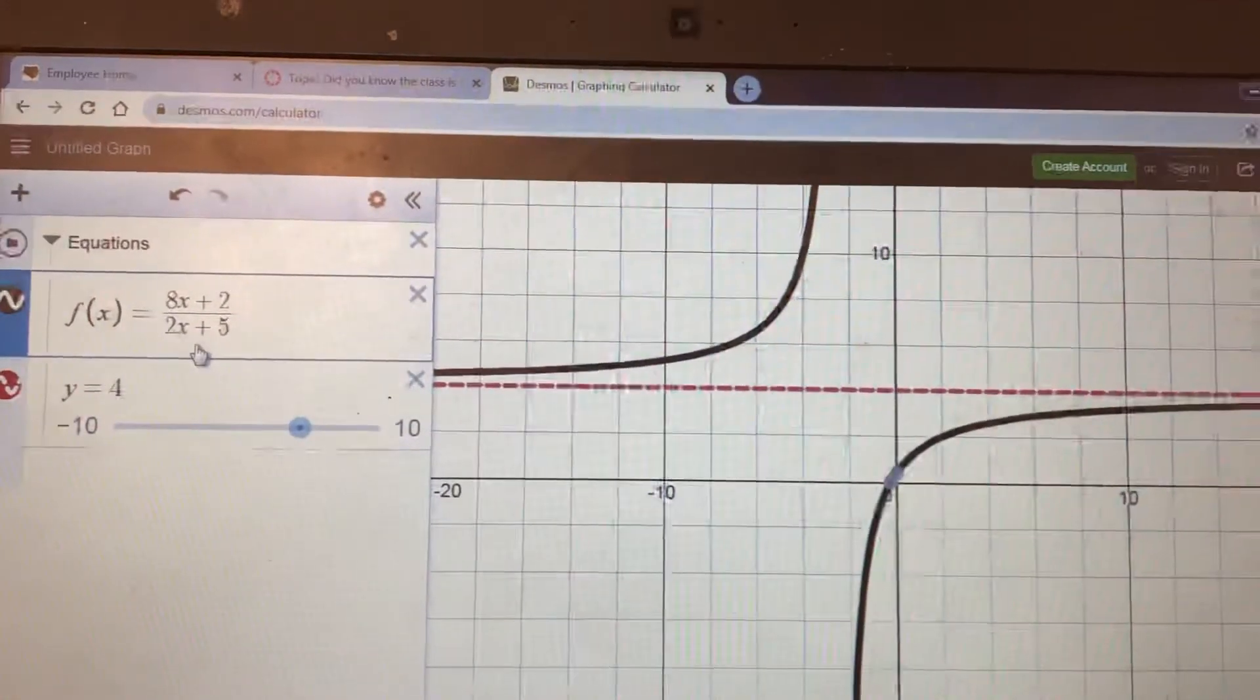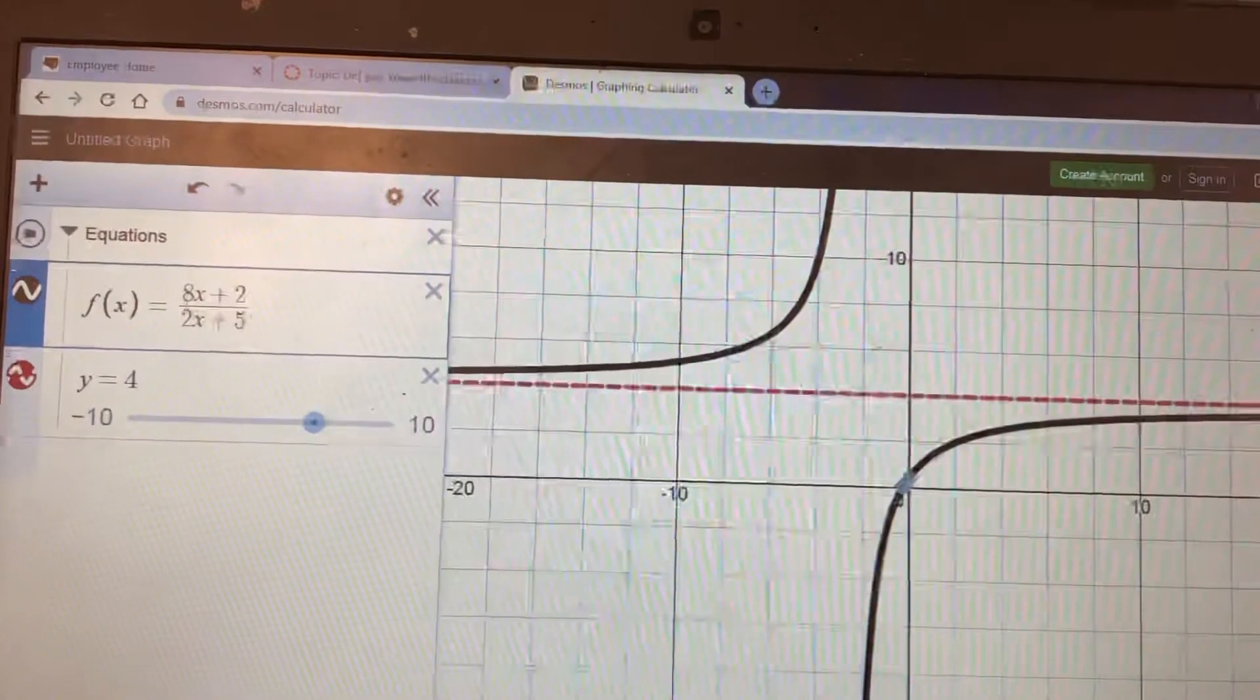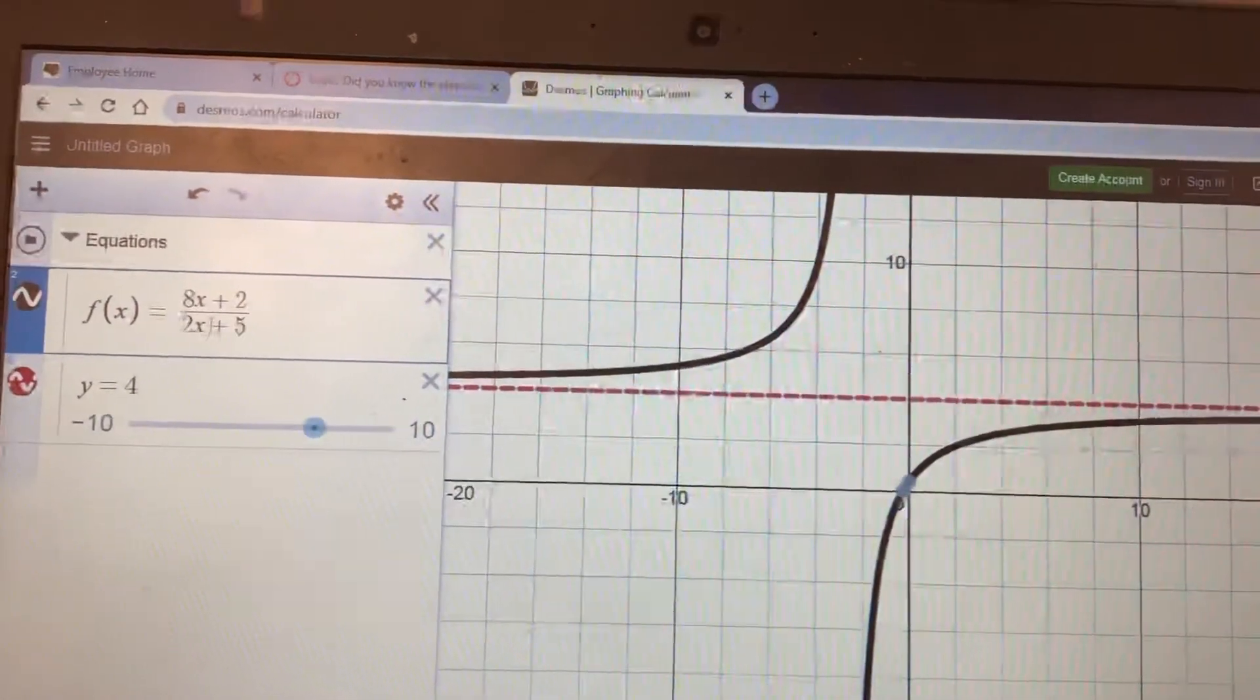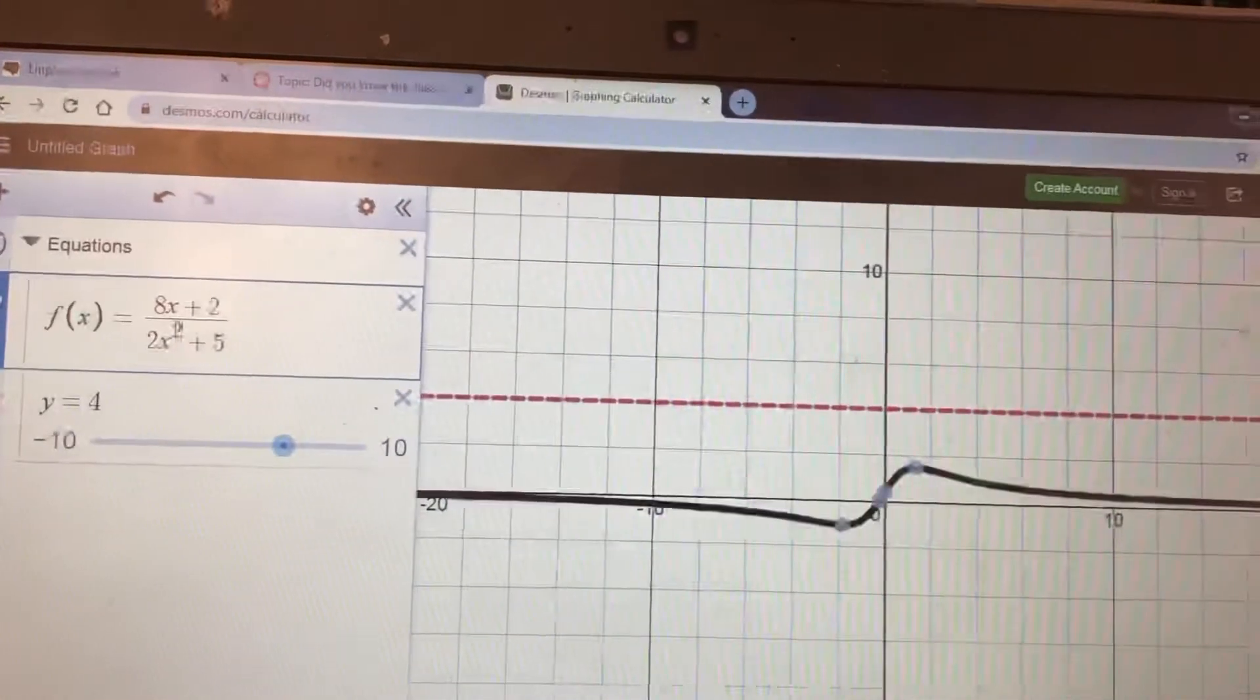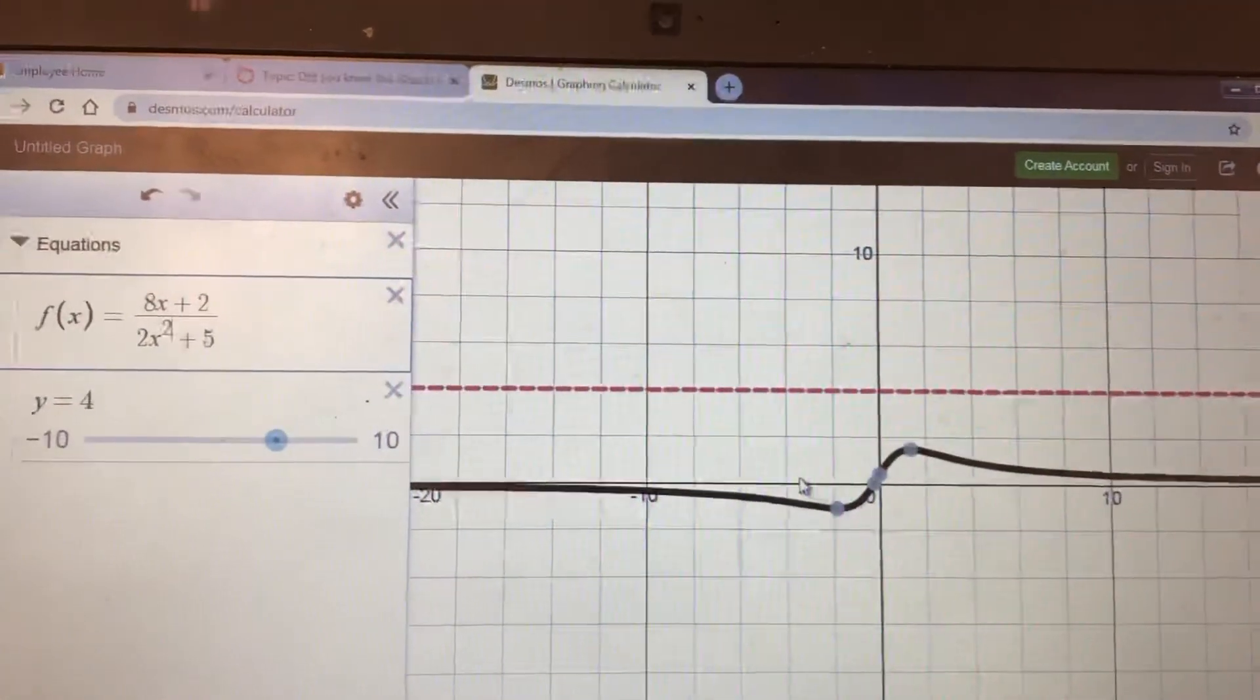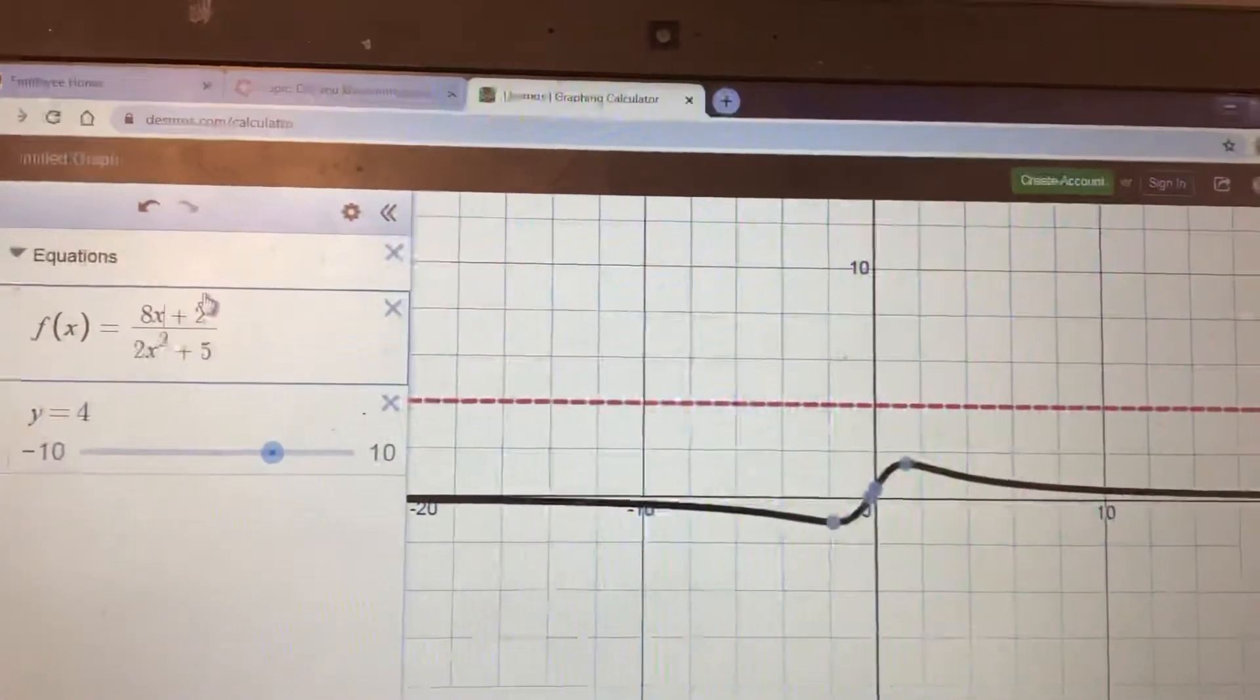It has to do with not just the leading coefficients but the degrees. Notice that the degrees match and the horizontal asymptote is the ratio of the leading coefficients. When the degrees don't match it wasn't - in this case it was down here at zero. But when I made the degrees match again it went back to being 4.